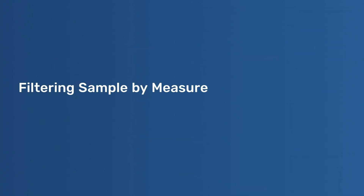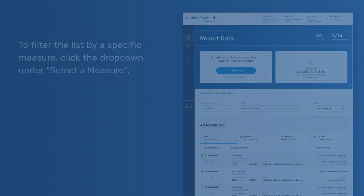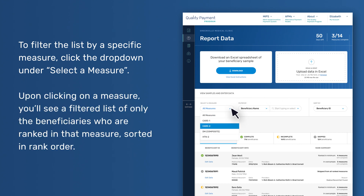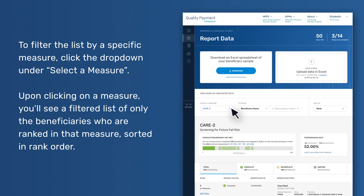Filtering sample by measure. To filter the list by a specific measure, click the dropdown under Select a Measure. Upon clicking on a measure, you'll see a filtered list of only the beneficiaries who are ranked in that measure, sorted in rank order.